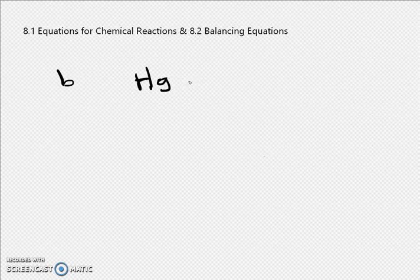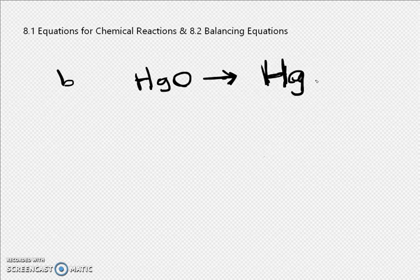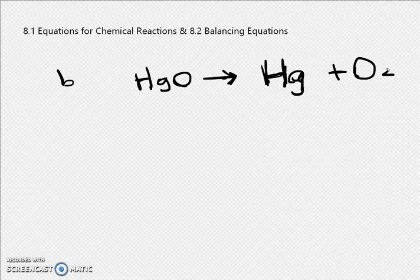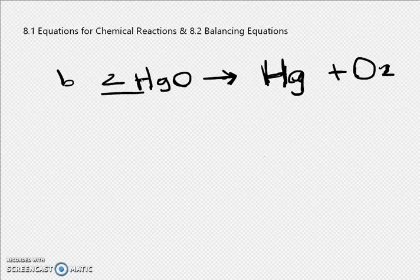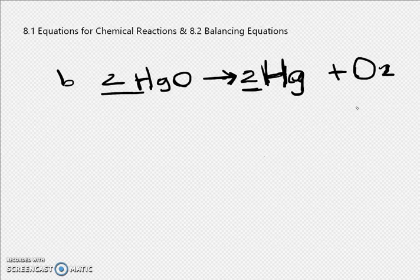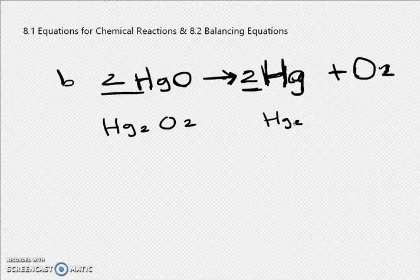We have HgO on the left equal to Hg plus O2 on the right. There's 1 Hg and 1 oxygen on the left, and Hg and O2 on the right. If you put a 2 in front of HgO, you get 2 Hg and 2 oxygens. Then put a 2 in front of Hg on the right, so you have 2 Hg and O2 — now both sides are equal.